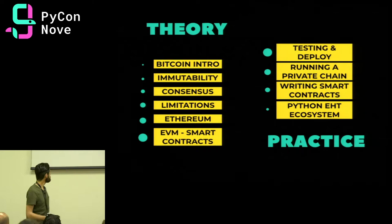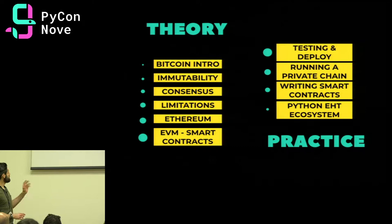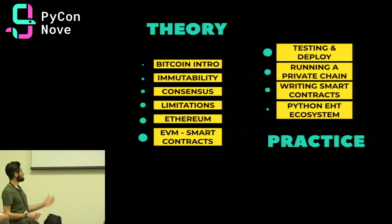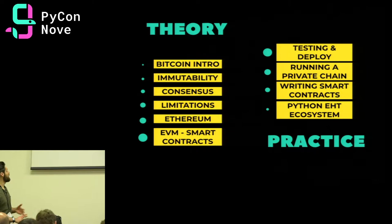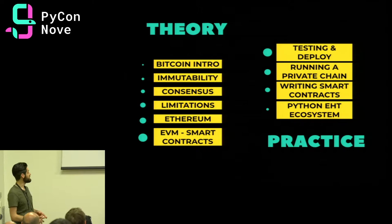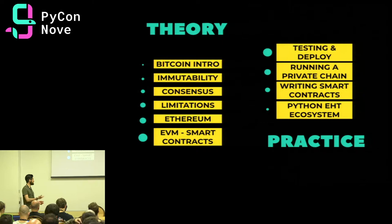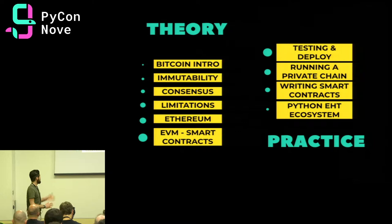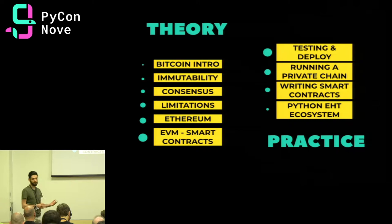I've divided the talk into two parts. In the first part, I go through the basic theoretical concepts about blockchain — we'll talk about Bitcoin, how it handles immutability and consensus, and what its limitations are. Then we'll talk about Ethereum and the innovative concepts of the EVM to manage smart contracts. Finally, we'll look at what tools and frameworks, written in Python, you can use to interact with Ethereum and write smart contracts.